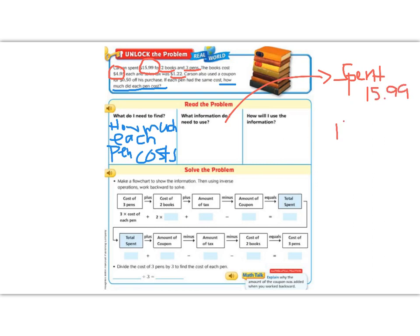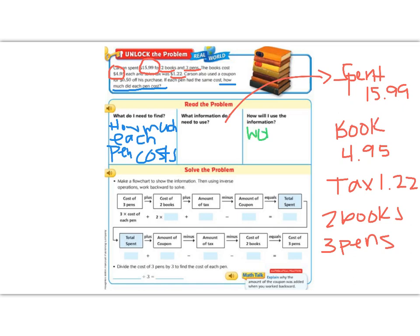We know that the books cost $4.95. And we know that tax was $1.22. The last thing we know is that he bought two books and he also bought three pens. Now this is a lot of information, so as you can see below, we're going to follow some steps. The steps that we're going to follow are we are going to work backwards. We're going to use what we already know to find out what we don't know.